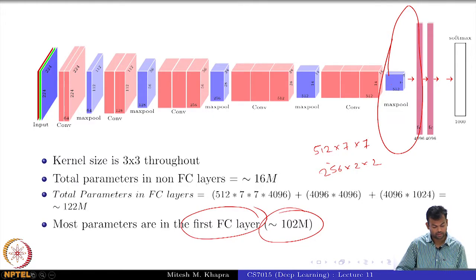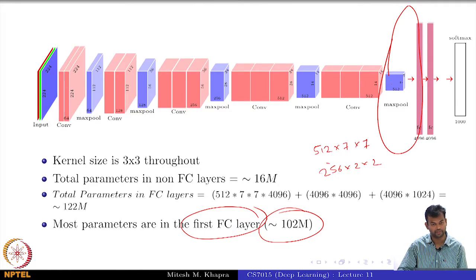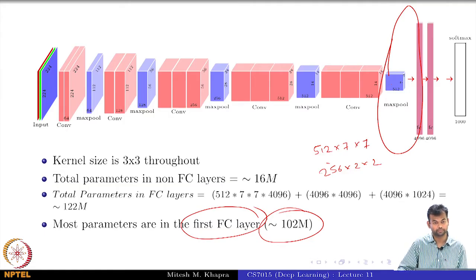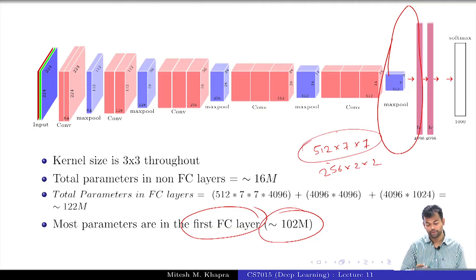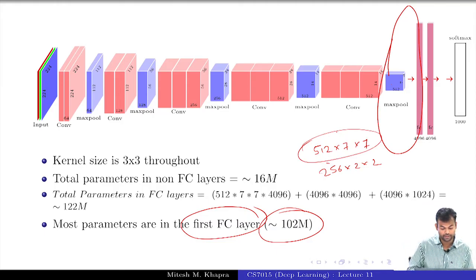This is where we left off in the last class. We looked at three networks for image classification, starting with AlexNet, then ZF Net, and then VGG Net. VGG Net in particular had 16 layers including convolutions and fully connected layers. A large number of parameters are there in the first fully connected layer because you are connecting a 512 × 7 × 7 volume to a 4096-dimensional vector.